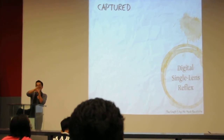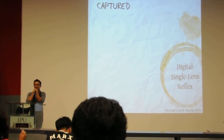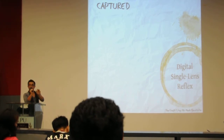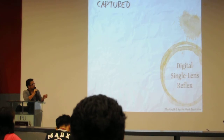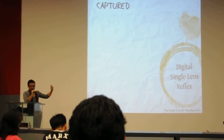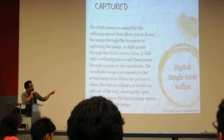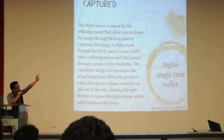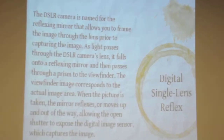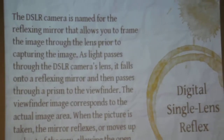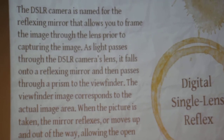You cannot be an expert overnight, not even in a few hours. So, later you'll be having our photo walk and I'll be giving you the details later. Digital single lens reflex is one kind. The other one is the digital range finder. The DSLR camera is named for the reflexing mirror that allows you to frame the image through the lens prior to capturing the image.